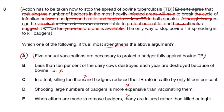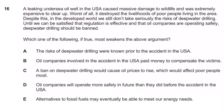Welcome back. Previously we looked at the TB question — killing badgers was the only way to stop the spread. That was a strengthens question, in contrast to a weakens question, but hopefully you can appreciate they are really just the same thing but in opposite directions. Now we're going to move on to Question 16.